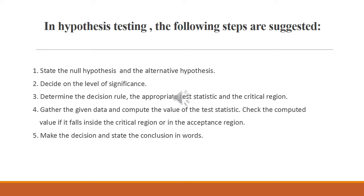There are five steps we should follow in the statistical hypothesis testing procedure. First, we state the null hypothesis and its alternative hypothesis. Second, we decide the level of significance. Third, we determine the decision rule, the appropriate test statistic, and the critical region. Fourth, we gather the given data and compute the value of the test statistic, then check whether the computed value falls inside the critical region or the acceptance region. Fifth, we make the decision and state the conclusion in words.